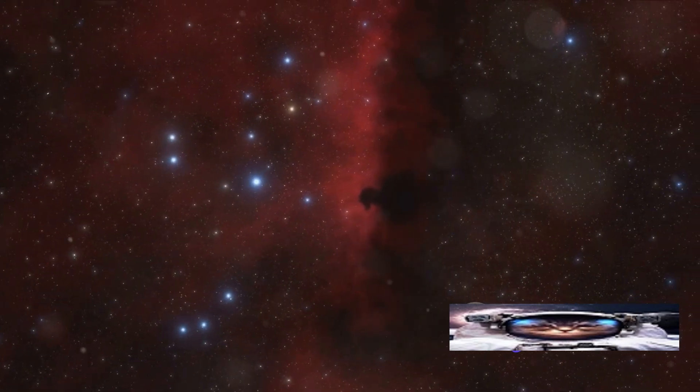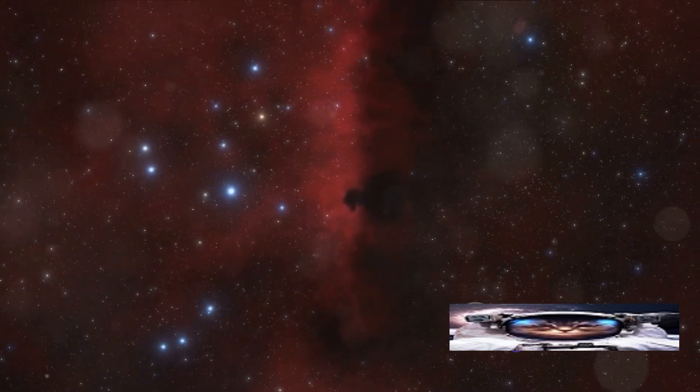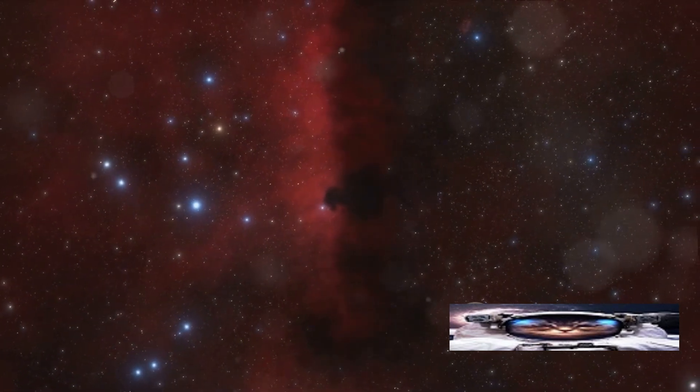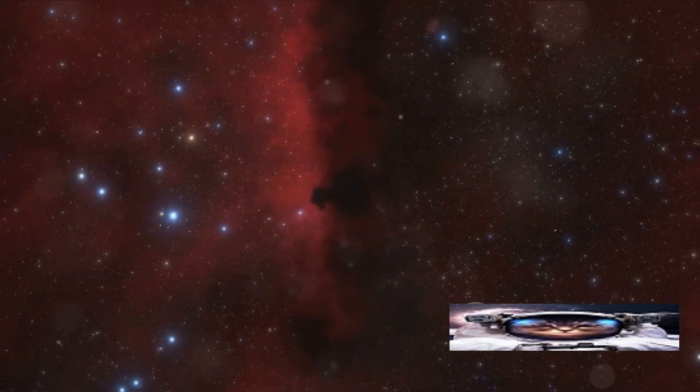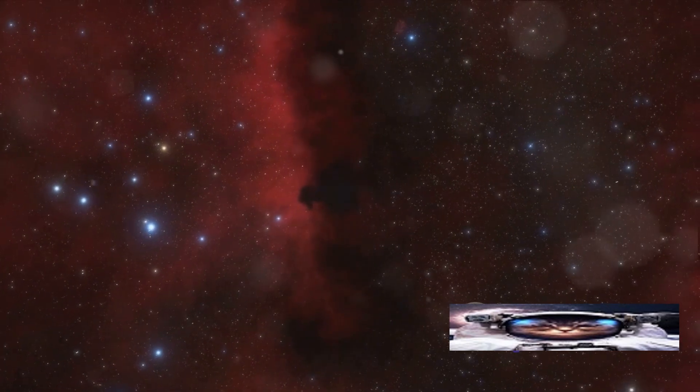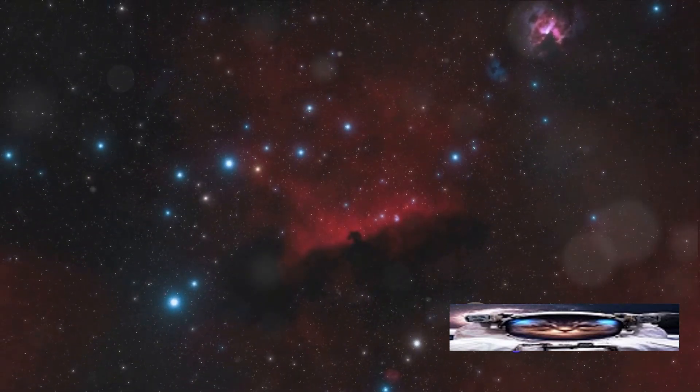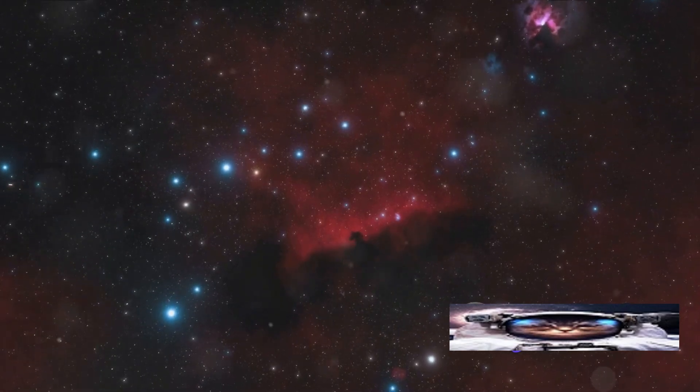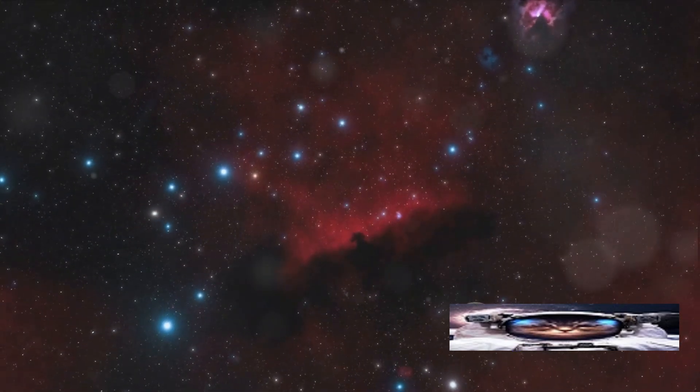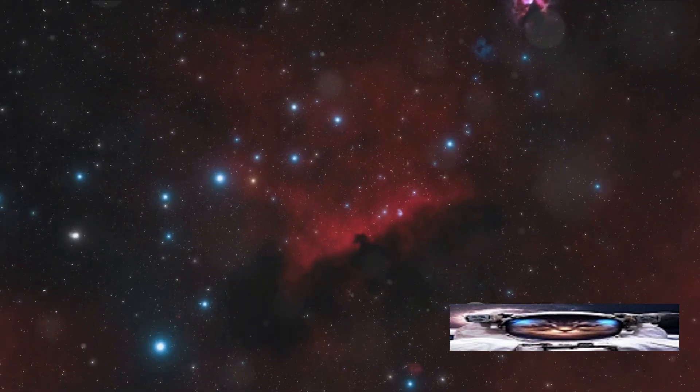Then we have dark nebulae, which are so dense that they block out the light from objects behind them. They are often seen as dark patches against the backdrop of a brighter emission or reflection nebula. Finally, there are planetary nebulae, named so not because they have anything to do with planets, but because through small telescopes, they resemble the round shape of a planet.